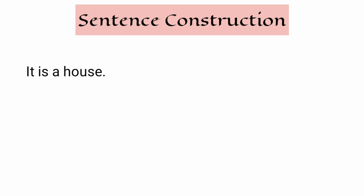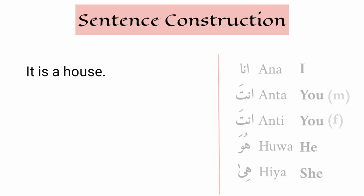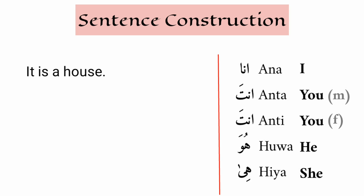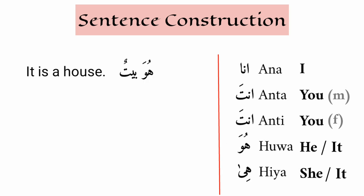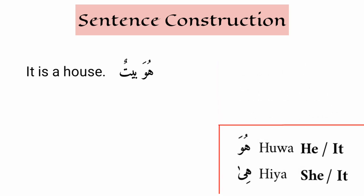For example: it is a house. We know what I, you, he, she means — ana, anta, anti, huwa — but we don't know about 'it' in Arabic. Arabic has no neuter gender; Arabic only has masculine and feminine gender. So for 'it is a house,' we must determine whether house is masculine or feminine. If house is masculine, it translates as huwa in Arabic; if feminine, as hiya. House is masculine, so: huwa baytun — it is a house.